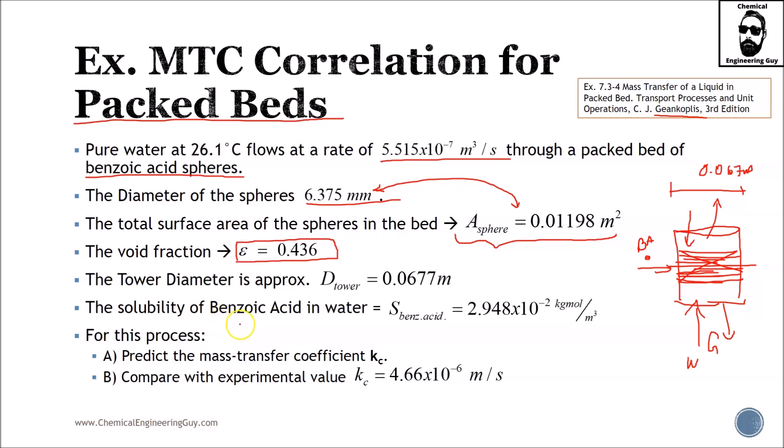The solubility of benzoic acid in water is Sbenzoic acid = 2.948×10⁻² kmol/m³. For this process: A) Predict the mass transfer coefficient Kc and B) Compare with the experimental value Kc = 4.66×10⁻⁶ m/s.